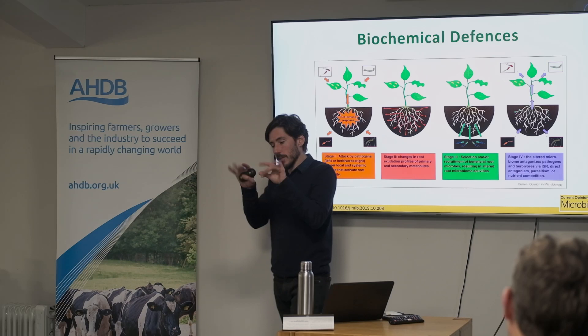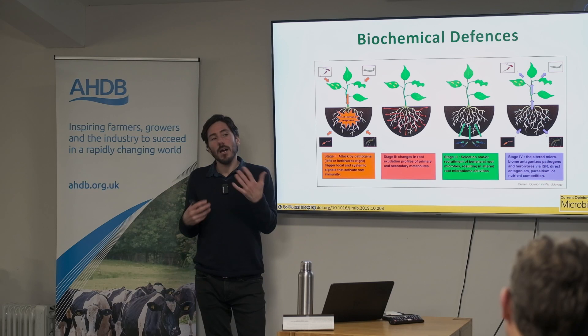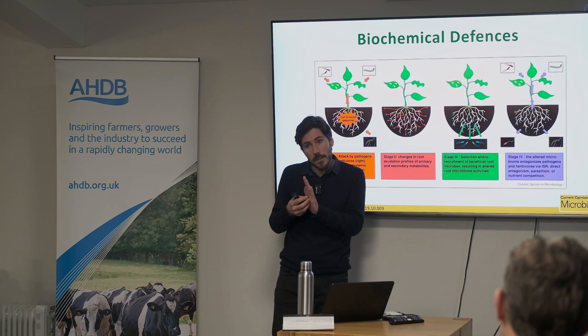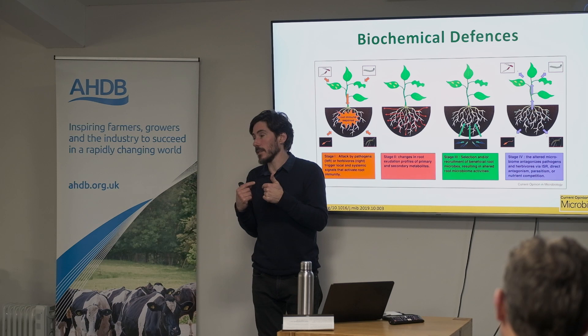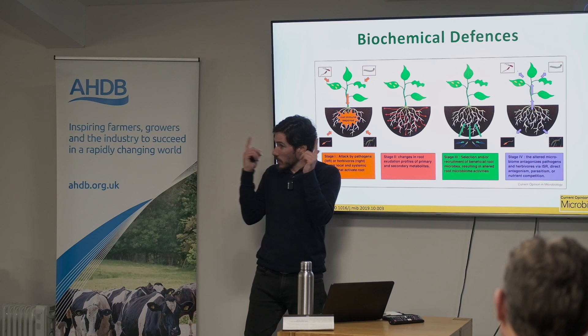The first mechanism: the microbe actually synthesizes a defense chemical, which the plant absorbs and translocates throughout itself. The second, more common mechanism: the microbe produces a signaling compound — not the defense chemical itself, but a signal that the plant's roots detect. That chemical from the microbe can uniquely switch on specific genes in the plant — genes that code for defense chemical production that the plant itself cannot even turn on alone.